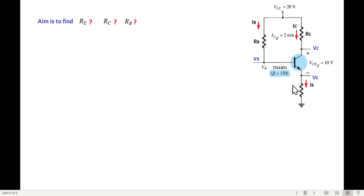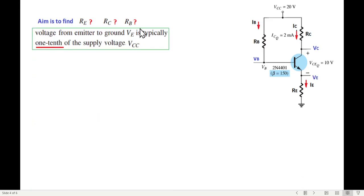RE is a part of the circuit. We know VE and IE. We can solve this. We can calculate VE. VCC is 20V, so VE is 2V.